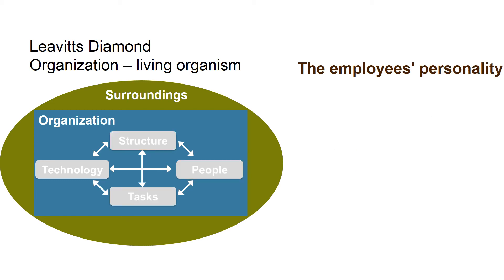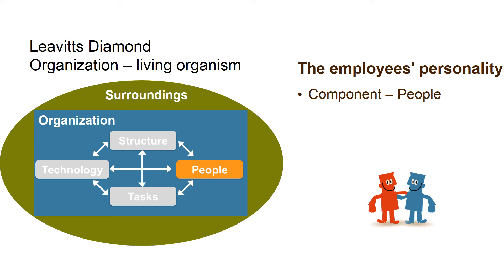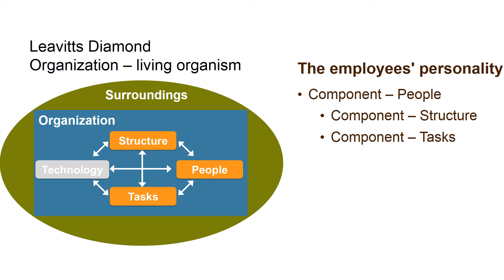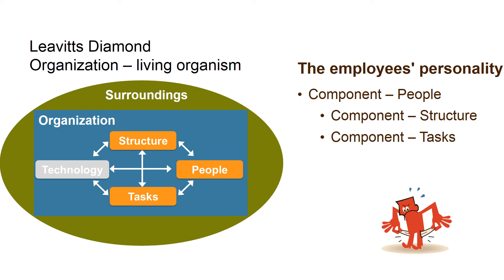The employees' personality is also part of the component People, just like the previous example. It is not just the employees' level of education that is essential for the distribution of responsibility and authority. The employees' personality certainly influences the design of the components Structure and Tasks. There is a big difference whether we are dealing with independent employees who want to work, or with employees who only go to work to make money as easily as possible.